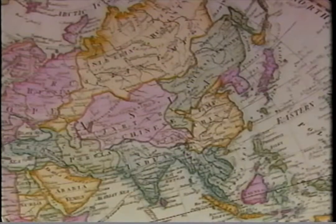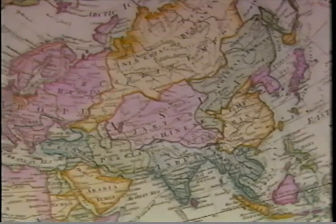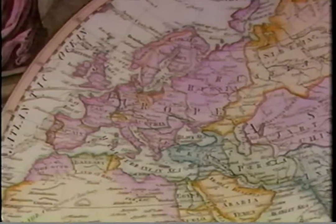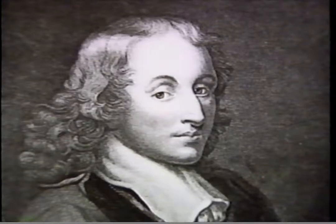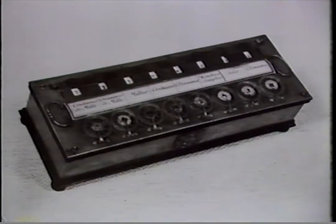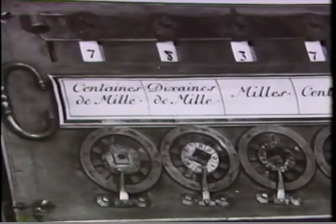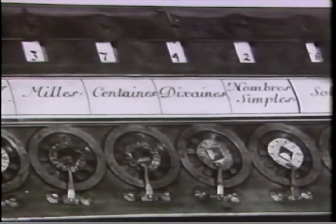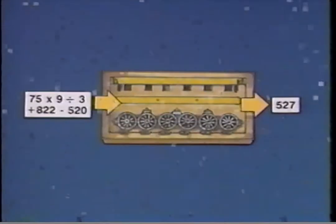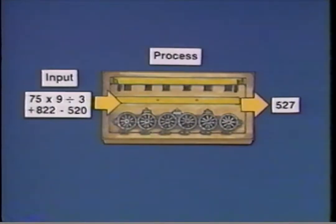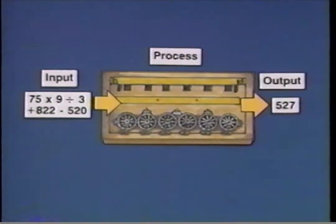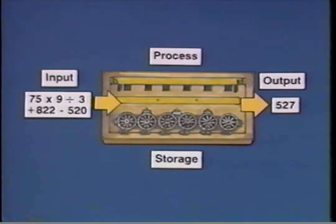The abacus helped eastern countries calculate numbers faster, but didn't catch on in the western world. It wasn't until 1642 that the western world produced its first computing machine, called the Pascaline, named after its creator, the famed mathematician Blaise Pascal. The Pascaline was a handcrafted brass box about the size of a milk carton with a series of wheels that could add or subtract long columns of numbers. Information was input, the Pascaline processed the numbers and provided output, though it could only temporarily store results until transferred to paper.